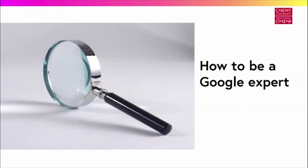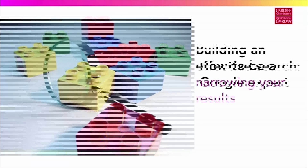The web is a great place to find openly available information about health from authoritative sources such as government departments, universities and charities. Google is usually the first point of call for finding information on the web, but it often retrieves an overwhelming number of results. This brief video will show you some handy tips and techniques to help you get the best out of Google.